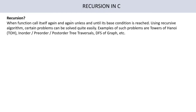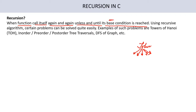The definition of recursion: when a function calls itself again and again, unless and until its base condition is reached, that is called recursion. Suppose John is a function and John is calling itself again and again — if somebody is calling infinitely, that means there should be some base condition at which this should terminate. This termination condition is called the base condition.